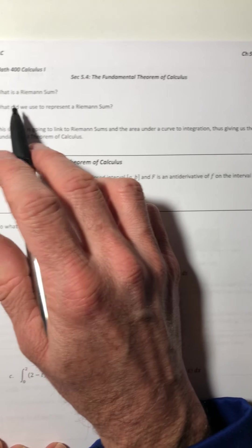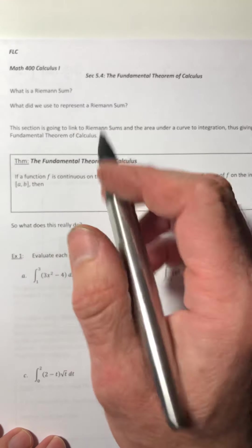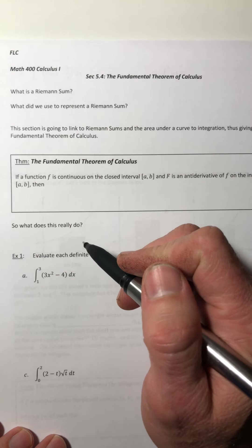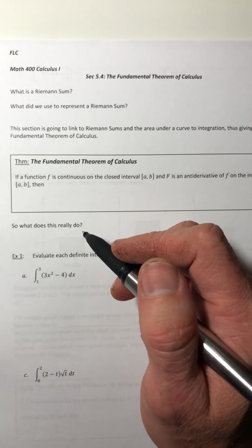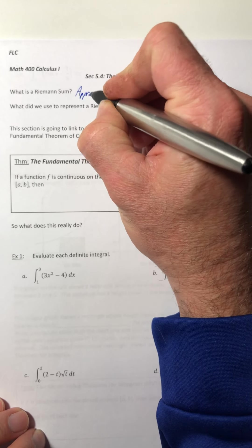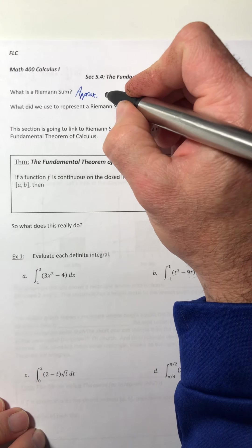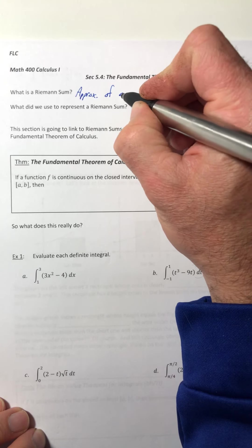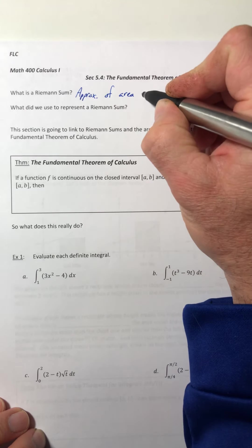So let's review for a moment. What is a Riemann sum? Hint, it was in the last section. Well, it's the approximation of the area under a curve.